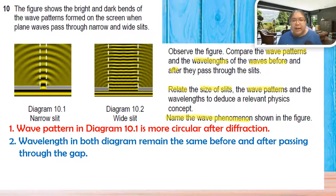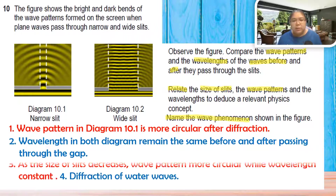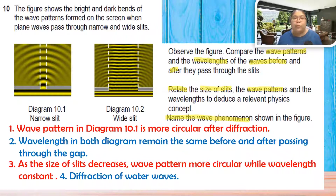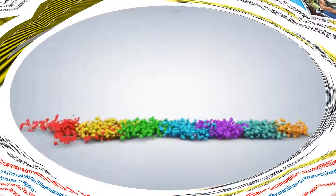Relate the size of the slit to the wave pattern: as the size of the slit decreases, the wave pattern becomes more circular, and the wavelength remains constant. Name the phenomena: diffraction of water wave. Until here, our questions are finished. Hopefully you can mark the answers. Coming soon is 5.6 interference of the wave - thanks for watching.